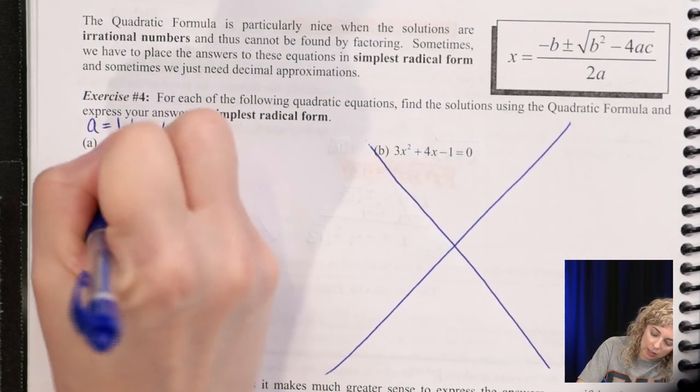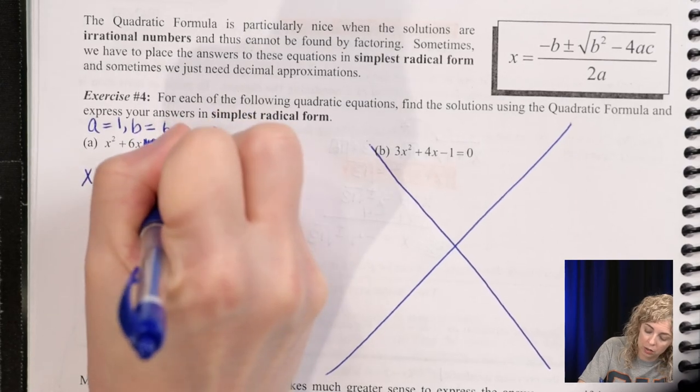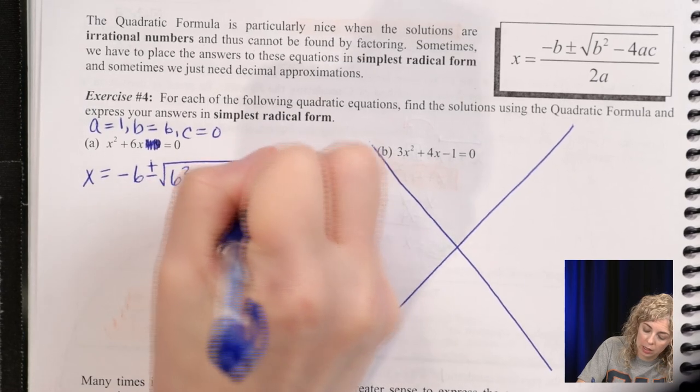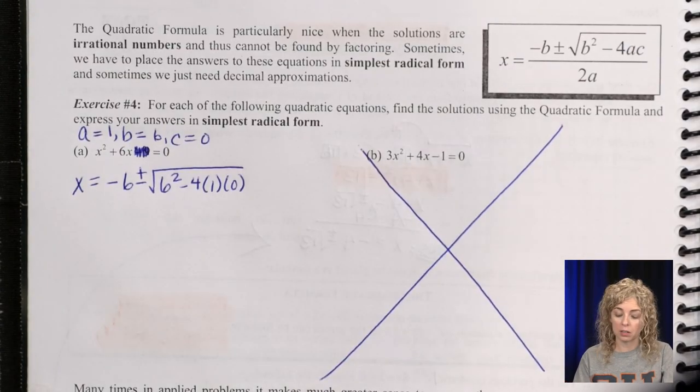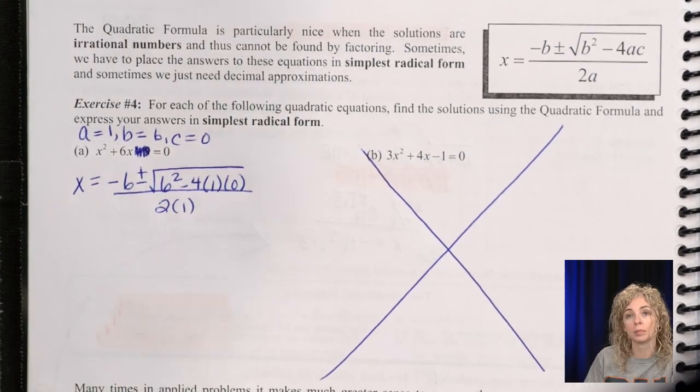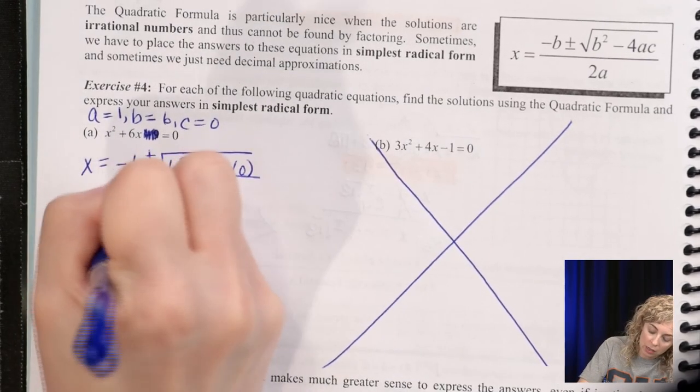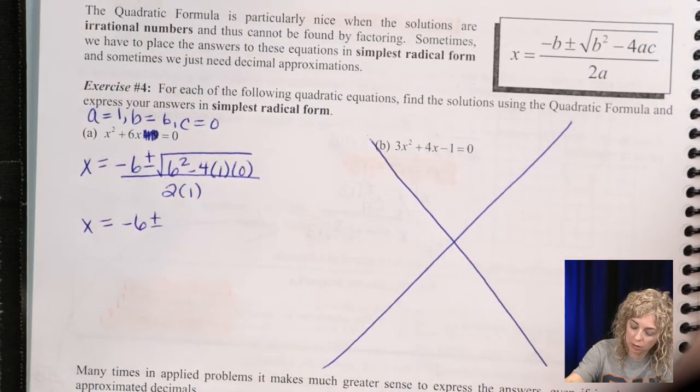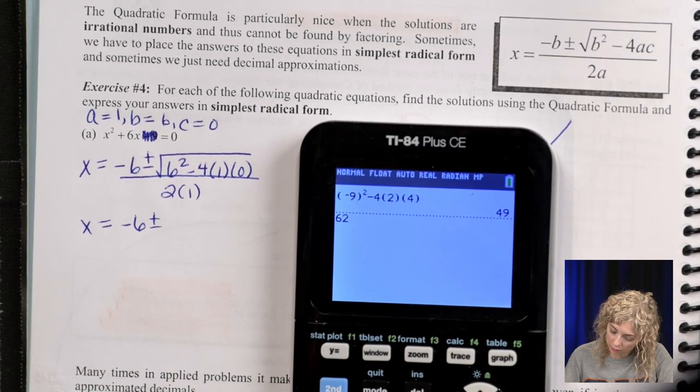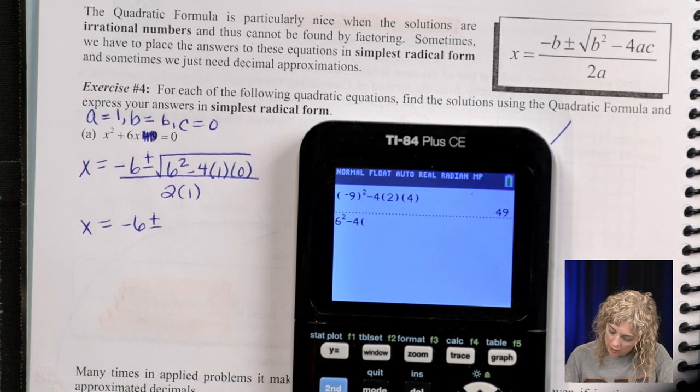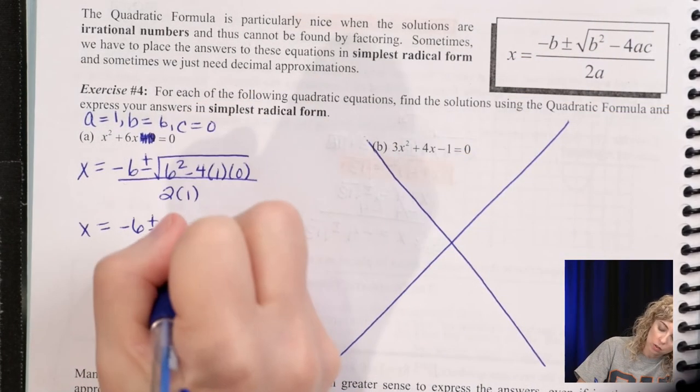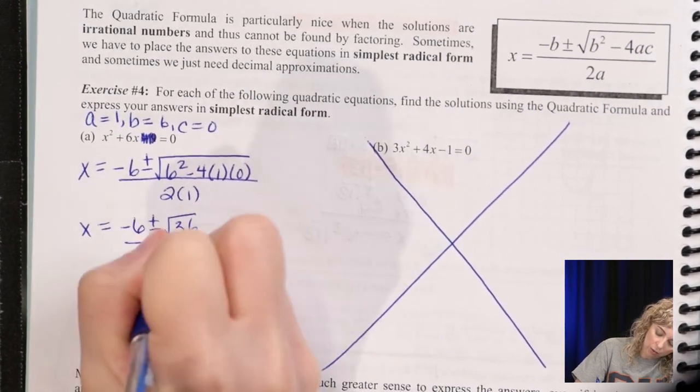So let's do our x equals negative b plus or minus square root b squared minus 4ac. So plugging in the numbers as I sang the little tune, all over 2a. Alright, so we have x equals negative 6 plus or minus the radical. So it's going to be 6 squared, oops, 6 squared minus 4, parenthesis 1, parenthesis 0, and we get 36. So the square root of 36 all over 2. And 36 is friendly. So yay, another perfect square.